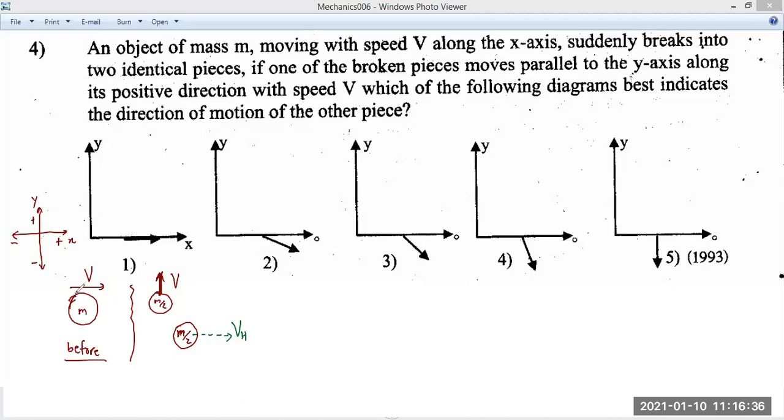Initially, there was no vertical momentum. But finally, one of the pieces is going vertically upwards. So, we need to cancel that out. Because initially, there was no vertical momentum. Therefore, there must be a vertical momentum in the downward direction acting on M2. I'll take it as Vv, vertical velocity component.